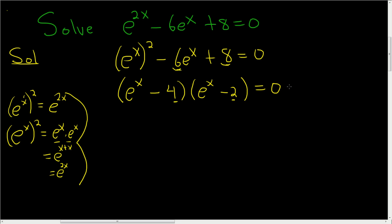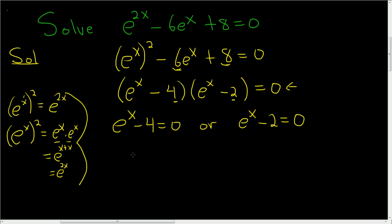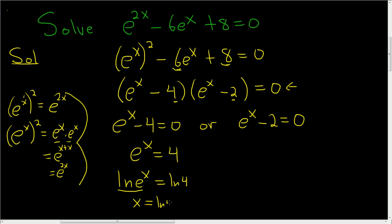We have a product equal to 0, so we can set each factor equal to 0. Solve for e to the x: e to the x equals 4. Take the natural log of both sides, and you get x equals ln 4. That's one answer. Do the same thing for the other factor: e to the x equals 2. Take the natural log of both sides.